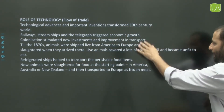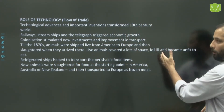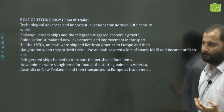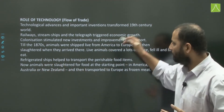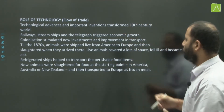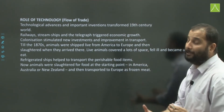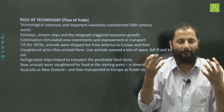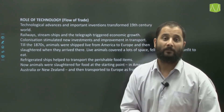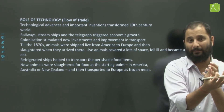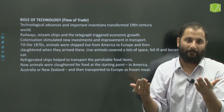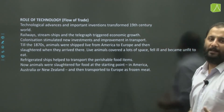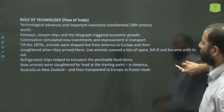Refrigerated ships helped transport perishable food items over long distances. Now with frozen meat, people in England and Europe started eating better — they could have eggs, butter, and meat at affordable prices. Their diet became more varied. Colonization also stimulated new investment and improvements in transport technology in those areas.